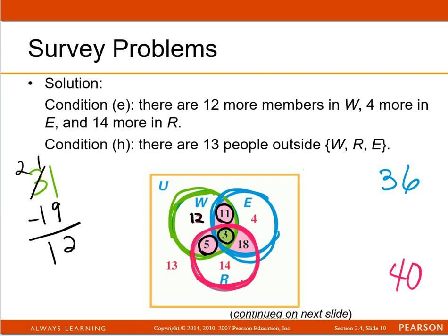And then I would do the same thing with the blue circle. You've already got 11 and 3 and 18. 11 and 3 is 14, 14 and 18 is 32. So in the blue circle there's supposed to be a total of 36. 36 minus 32 is 4, that's where they got this 4.